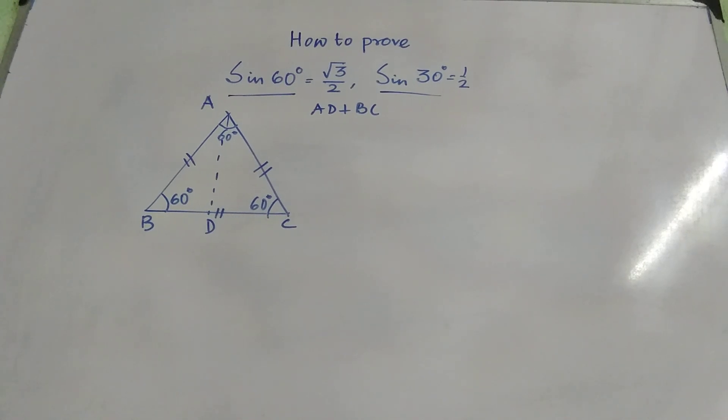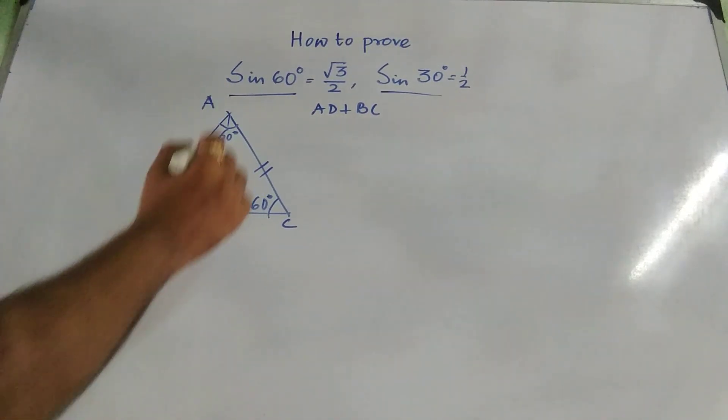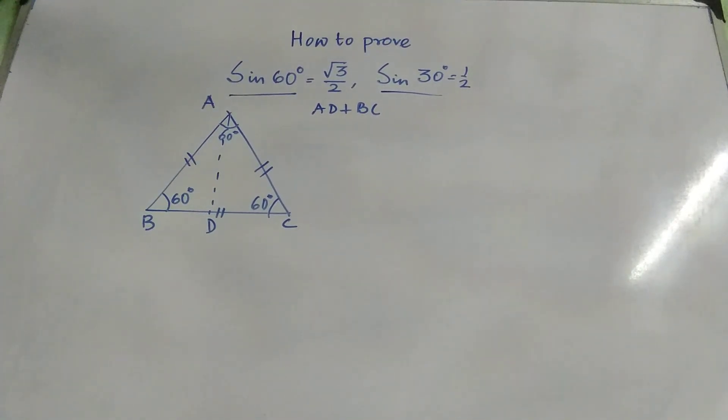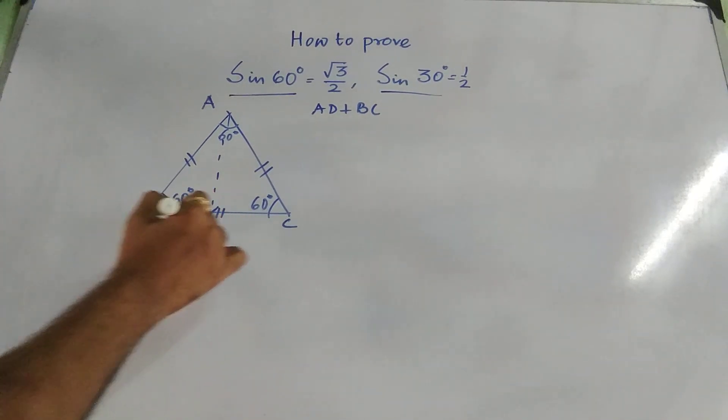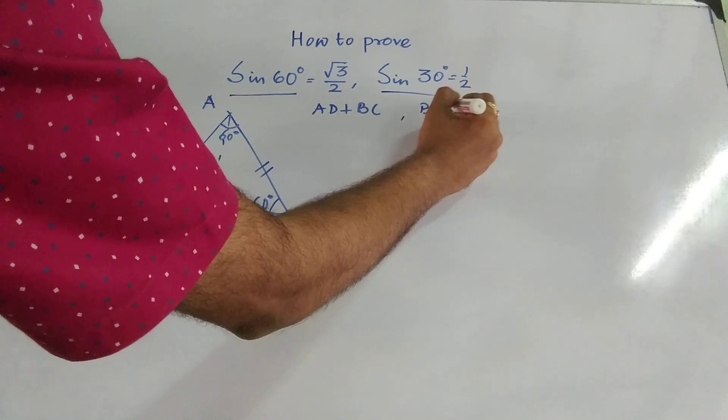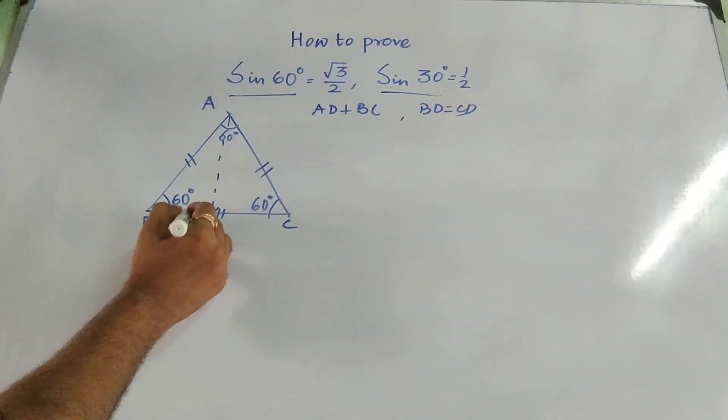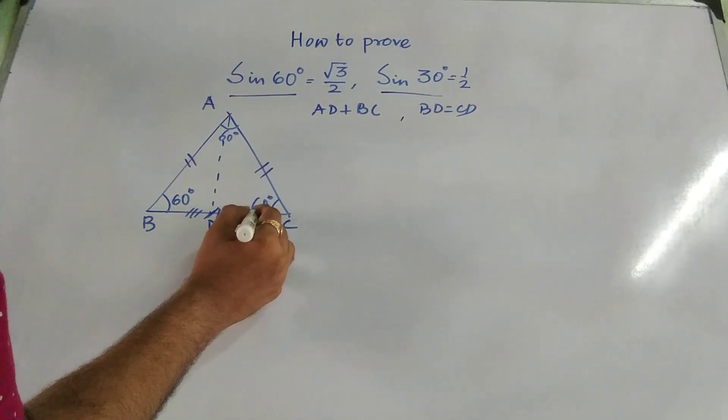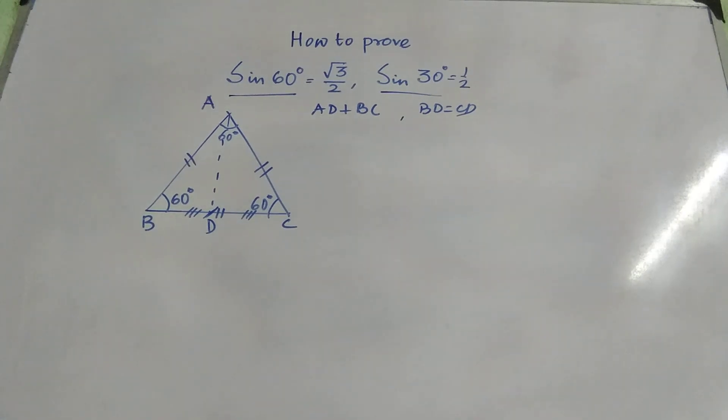For an equilateral triangle, we know that perpendicular from the opposite vertex divides the base equally. So that means D is the midpoint of BC. That means BD equal to CD. D is dividing the base BC equally.